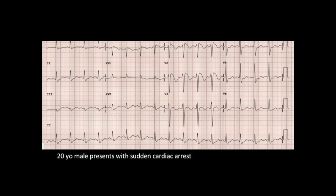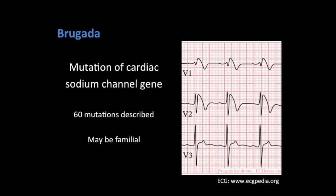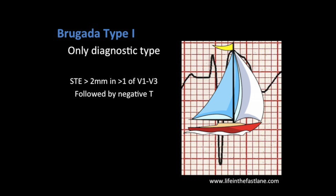Finally, we have everybody's favorite ECG that shows up on every board exam — the 20-year-old male presenting with sudden cardiac arrest. The findings in this ECG are classic for Brugada syndrome. Brugada stems from a mutation of the cardiac sodium channel genes. The scary thing is it often affects very young people, especially males of classically Asian descent, and when it's diagnosed is when these people suddenly collapse or go into a sudden cardiac rhythm at a very young age. Brugada has three different types seen on ECG. Type 1 is the only diagnostic type — ST elevation greater than 2 mm in more than one lead of V1 through V3, followed by a negative T wave. This is often called the sail sign because the ST segment looks like a sail.